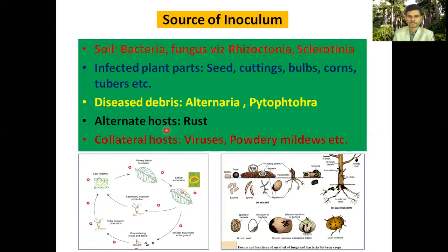The alternate host also serves as a source of inoculum. If the natural host is absent, the alternate host acts as a new host for viruses and powdery mildew pathogens. Diagrams and figures showing sources of inoculum include bacterial spores, fungal spores, seeds, cuttings, corms, and tubers — all of which act as sources of inoculum.